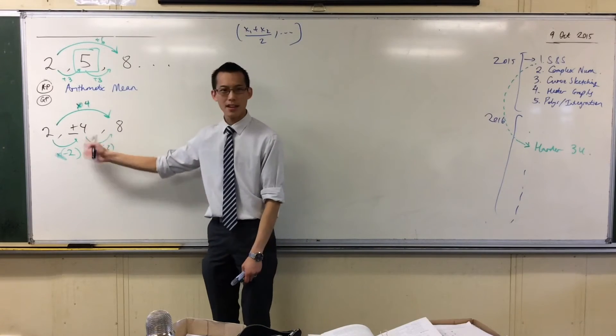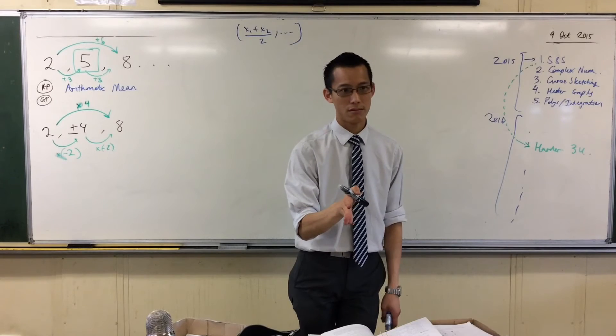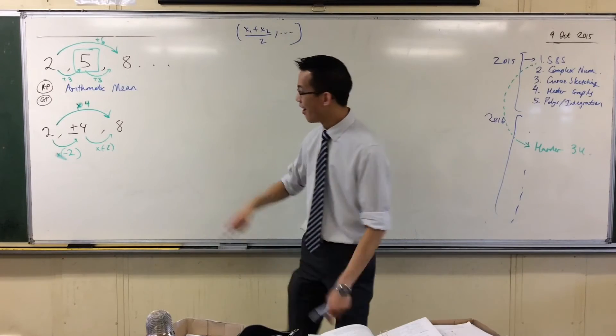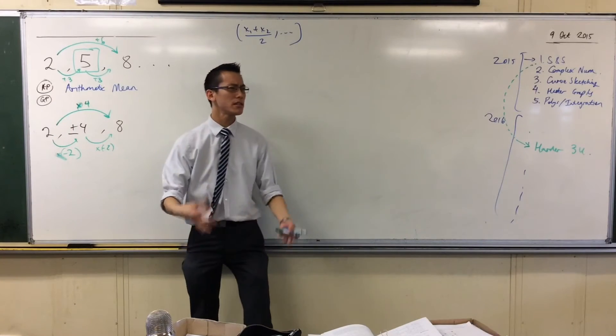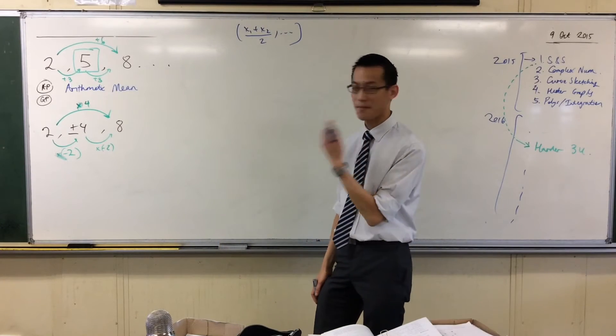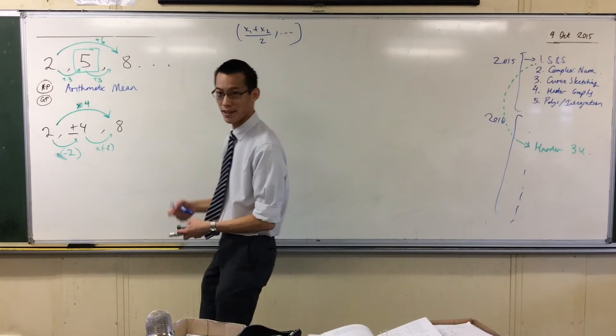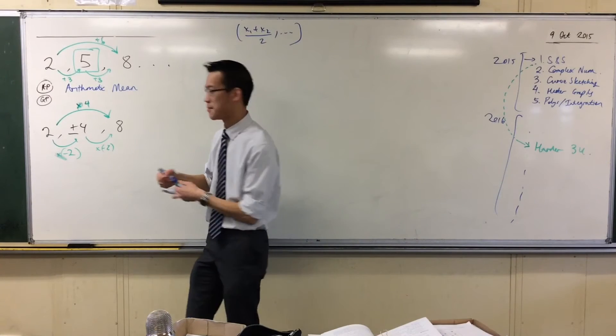Now this is a number that in a real sense is still in the middle, middle in inverted commas, of these two numbers. It's just in the middle in a different way. It's still a mean, and because it's a mean that we think of in terms of a GP, in terms of a geometric context, we call it, no surprises, the geometric mean.